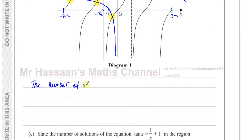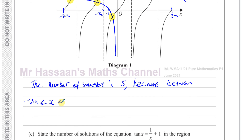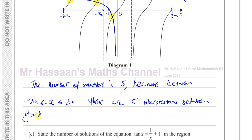The number of solutions is 5. The reason: between minus 2 pi and 2 pi, there are five intersections between y equals tan x and y equals 1 over x plus 1.